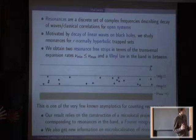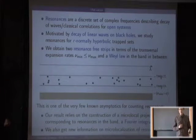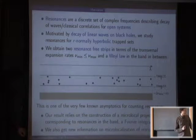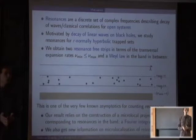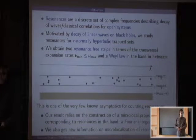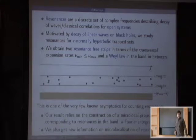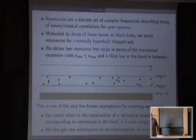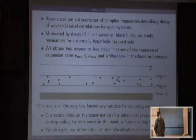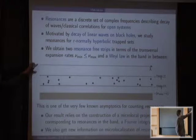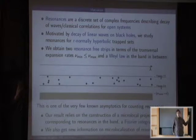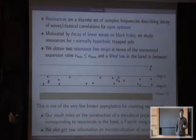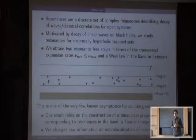Because of this structure that we recover here, we get new information about localization of resonance states — analogues of eigenfunctions. The sizes of the strips are given by natural dynamical quantities. Once I state the dynamical assumptions, these are the minimal and maximal expansion rates, or Lyapunov exponents, in the direction transversal to the trapped set.